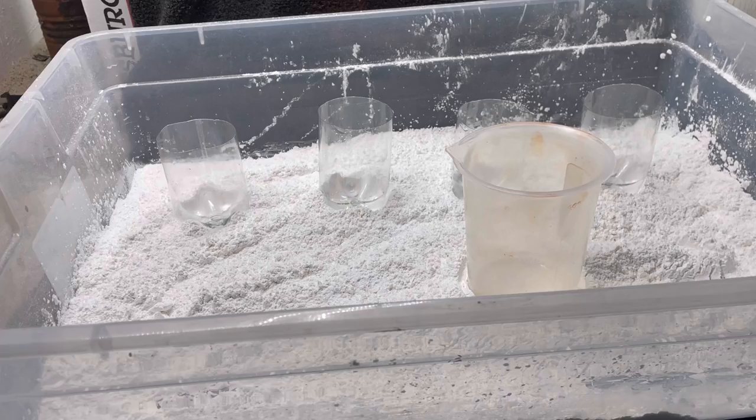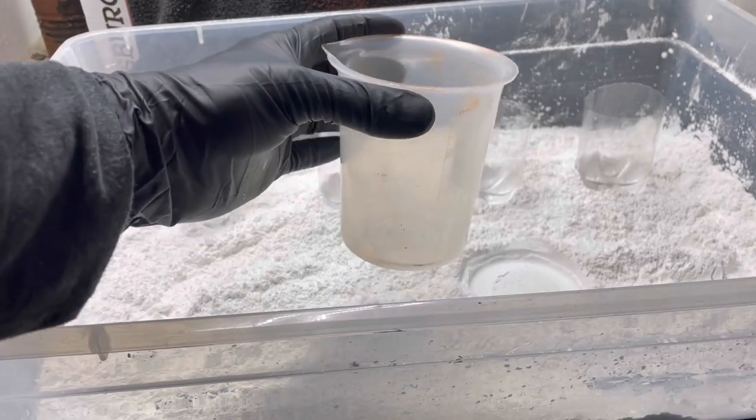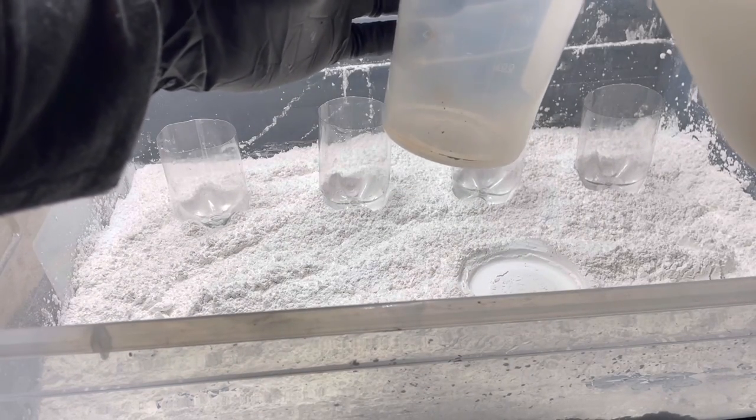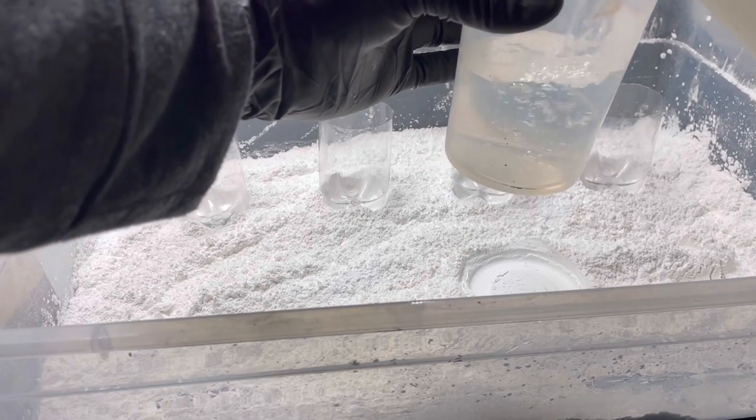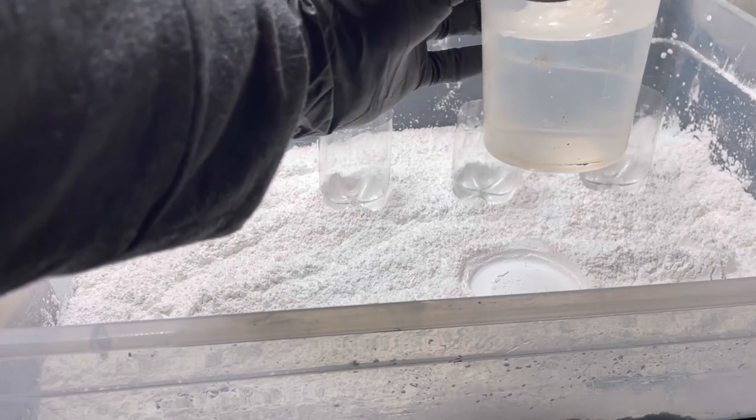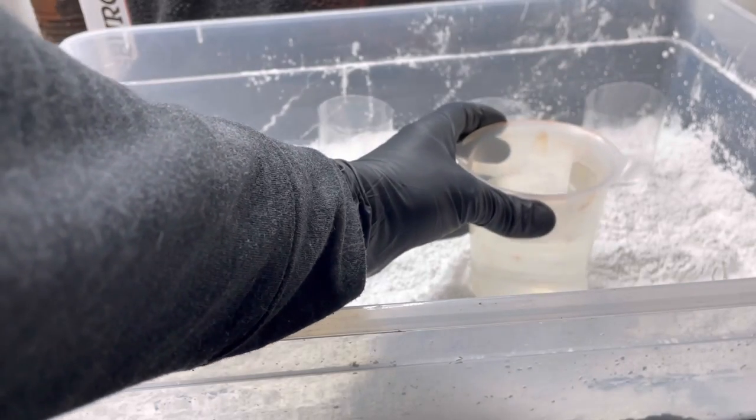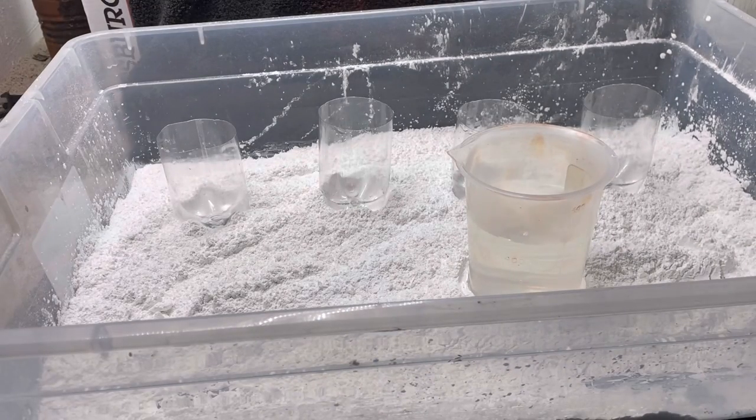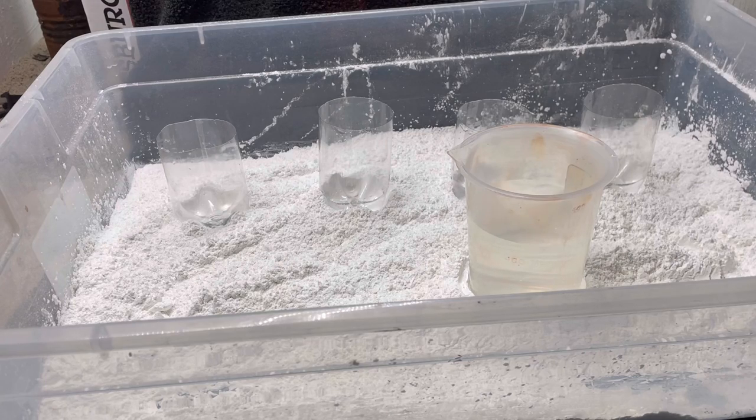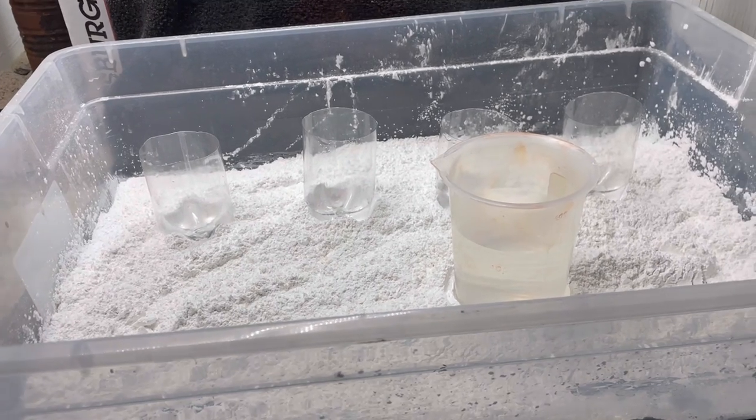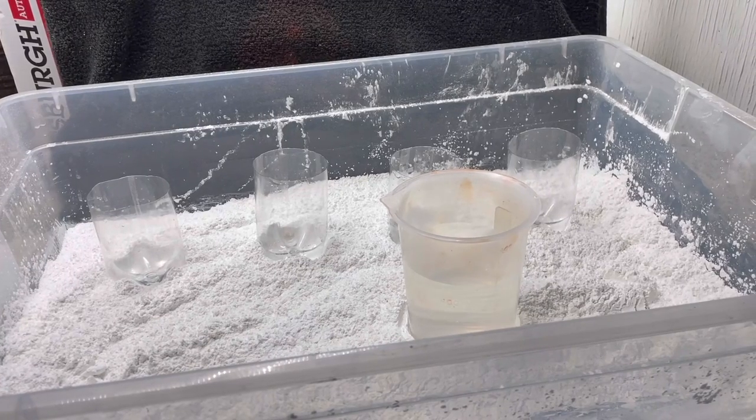So this acid is able to dissolve glass, metal, ceramics, flesh, but it is powerless against plastic. Which is why everything I'm using here is made out of plastic. I've also got this tub full of lime to catch any drips and neutralize the acid and the vapors I produce should be pulled away by the fan you can hear running.